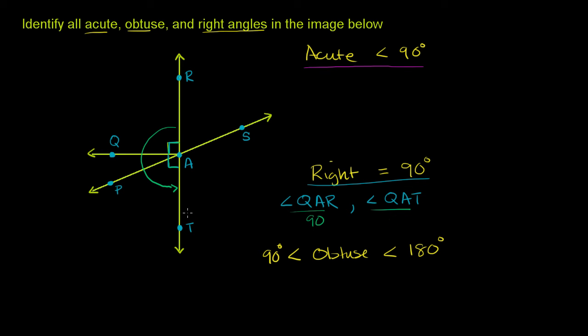So with that out of the way, now let's look at the acute angles, because that actually gives us a lot of information. Because if this entire angle, if QAT is 90 degrees, then any of the angles that make up QAT have to be less than 90 degrees.